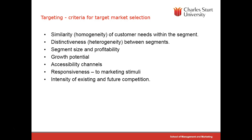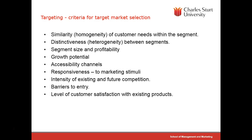Other criteria include barriers to entry such as access to distribution channels, switching costs, and switching barriers — which we looked at with Michael Porter's analysis, each of which can be applied to a segment. We also look at the level of customer satisfaction with existing products, which may be an opportunity, although in some cases — particularly in the mobile phone market — satisfaction may be so low that people are unwilling to switch. Finally, potential for the introduction of a game changer or new product innovation might be another basis for selecting a segment to target.